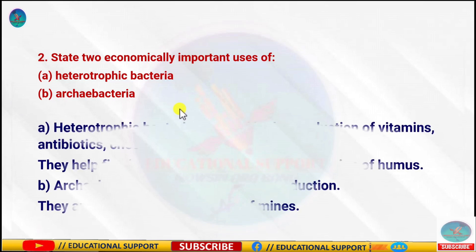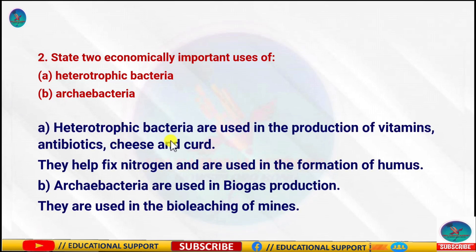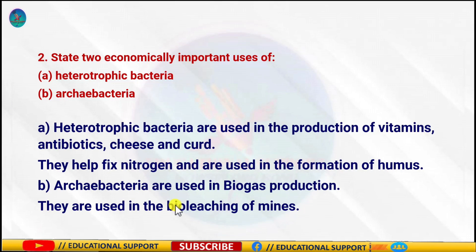Question number two: State the economically important uses of heterotrophic bacteria and Archaebacteria. Heterotrophic bacteria are used in the manufacture of industrial products such as antibiotics and vitamins, and in production of chemicals. They are also used in agriculture for the formation of manure and nitrogen fixation by Rhizobium. Archaebacteria are used in biogas production and in bioleaching of mines.